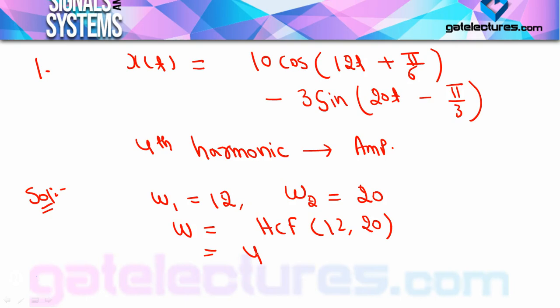The 4th harmonic's amplitude — understand that in Fourier series the representation has terms cos(nω₀t) and sin(nω₀t), meaning whatever is with t is nω₀. ω₀ is 4. For the first term, nω₀ = 12, so n = 3. That means the 3rd harmonic has amplitude 10. For the second term, nω₀ = 20, so n = 5, meaning the 5th harmonic has amplitude −3. Only 2 terms are present — the 3rd and 5th harmonics — so the 4th harmonic's amplitude is 0 since it is not present.